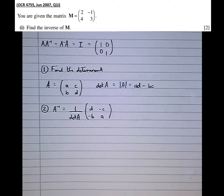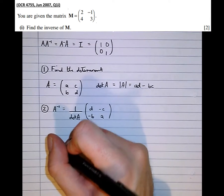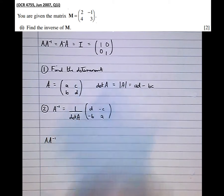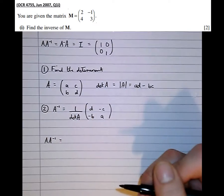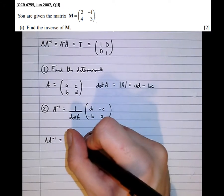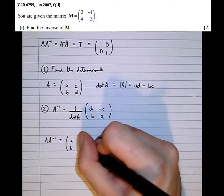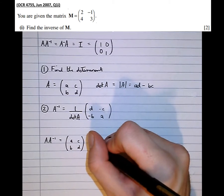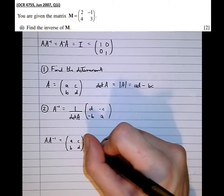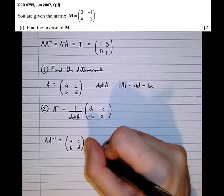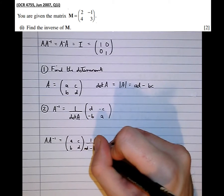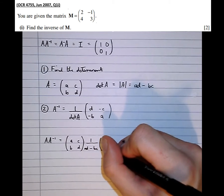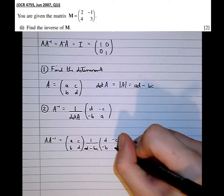So let's just check that this works. Let's do A times A to the power of minus 1. So in this case A is the matrix A, B, C, D, and we multiply by 1 over (AD minus BC) times the matrix D, minus B, minus C, A.